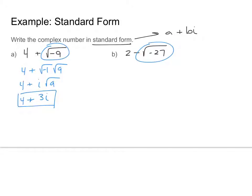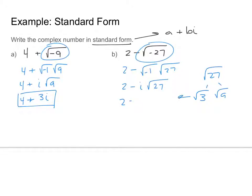Now let's try 2 minus the square root of negative 27. I'll pull out the square root of negative 1, leaving i, and then break up root 27 into root 9 times root 3, which simplifies to 3 root 3. So I have 2 minus i times 3 root 3, which I rewrite as 2 minus 3i root 3. That's the final answer in standard form.